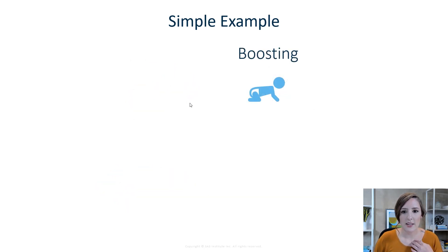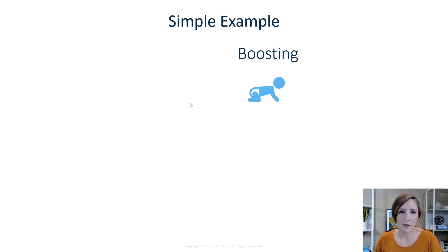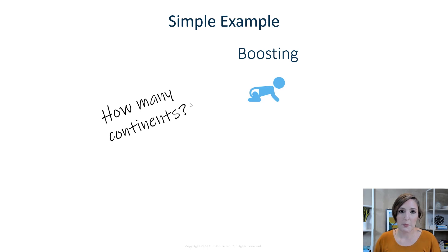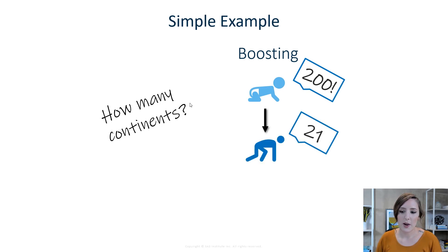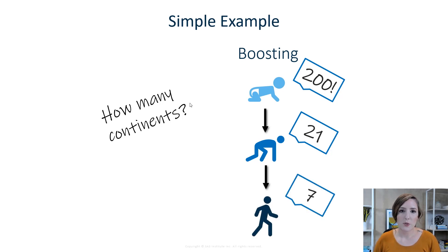So if your data doesn't have high variance and has low variance with high bias, you might be able to learn how those errors are being made and improve upon the model that way. So we have this weak learner — at first they give a random answer like 200. Then the kid grows up and matures, learning from their mistakes, and now says something like 21. Then we keep training, keep learning from the errors, and finally we have an improved model that gives a better answer.